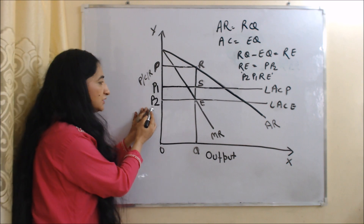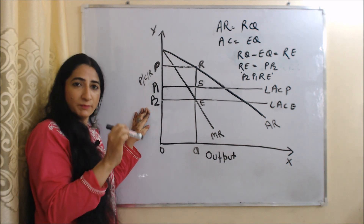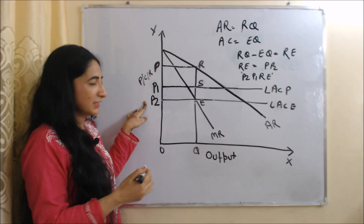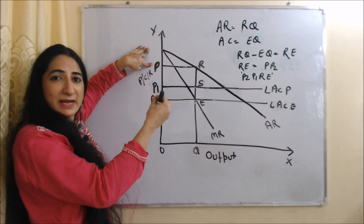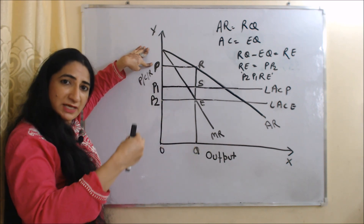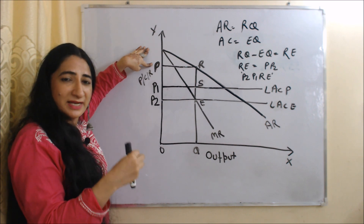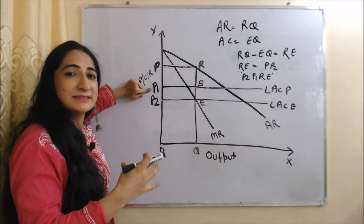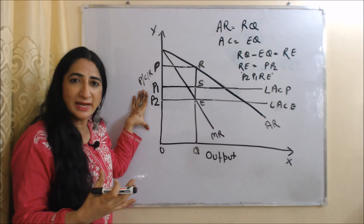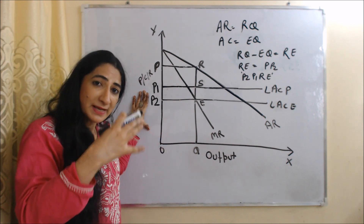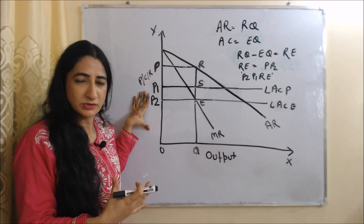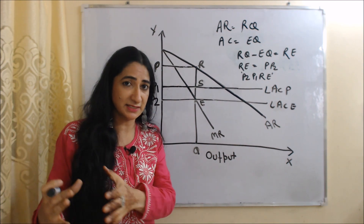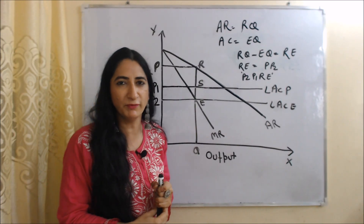Existing firms will not charge P2 price because P2 price is the perfect competition price — it is very low, and their profit will fall significantly. They also cannot charge OP price because that is the monopoly price, at which new firms can enter the market. They will charge a price between monopoly and perfect competition. OP1 price is between the monopoly price and the perfect competition price. At this price they can prevent entry of new firms and also earn some profit. So OP1 price is the limit price, and this is a short time period strategy of existing firms to prevent entry of new firms.